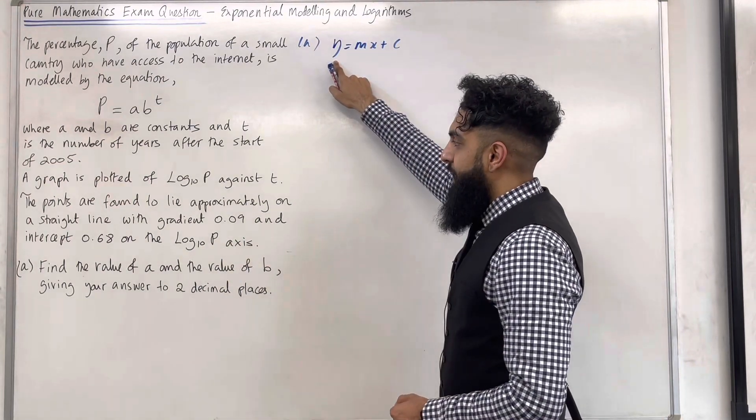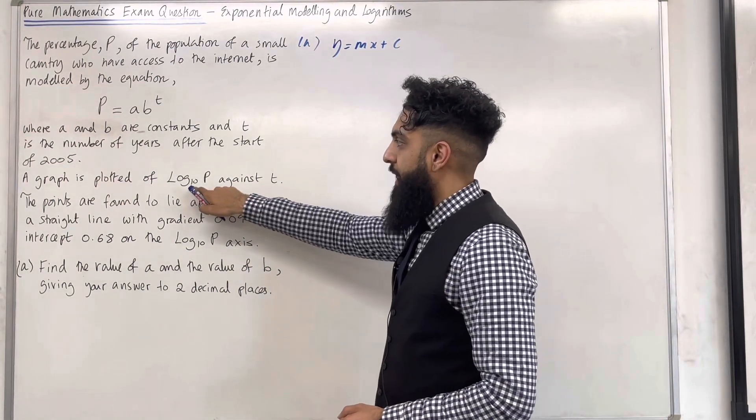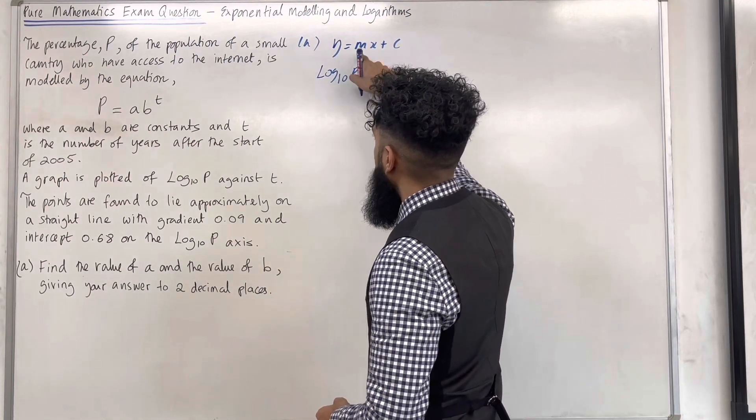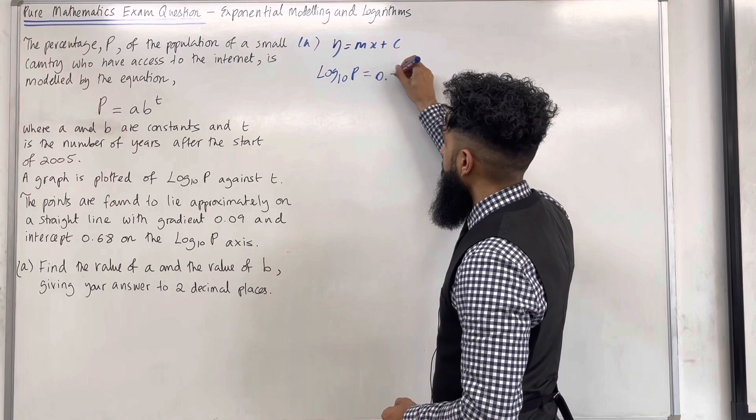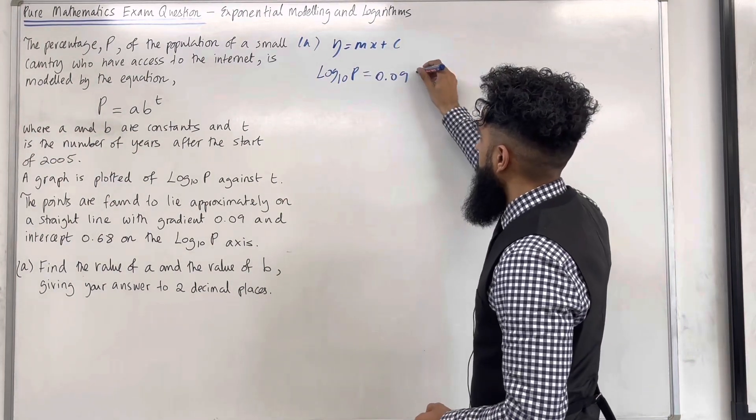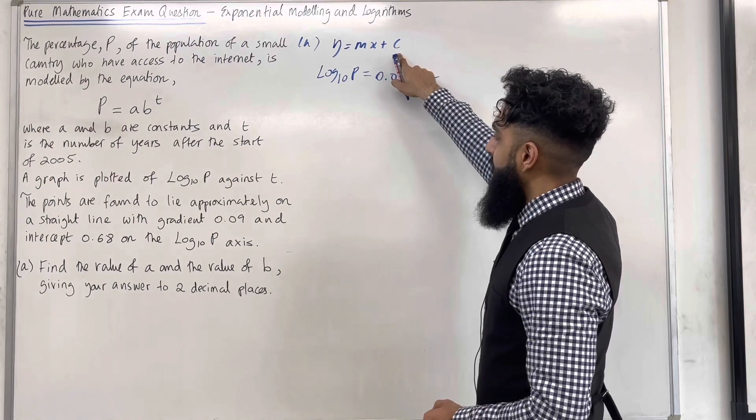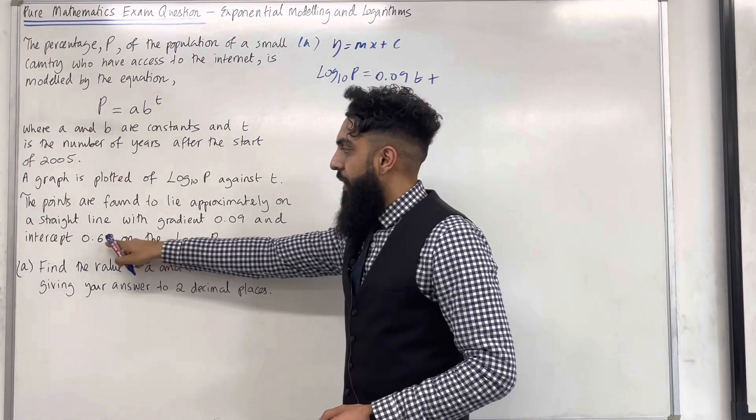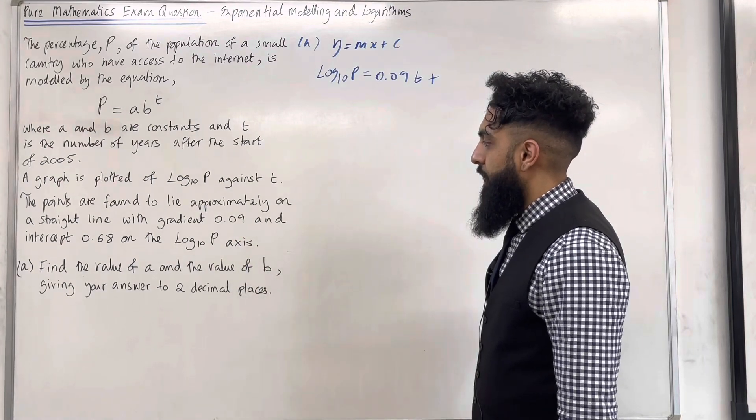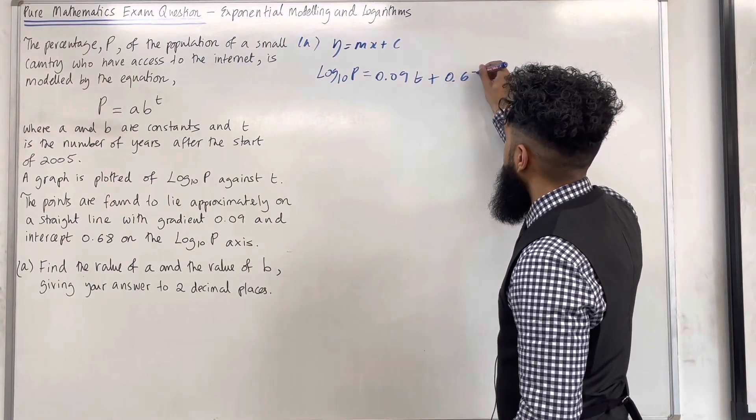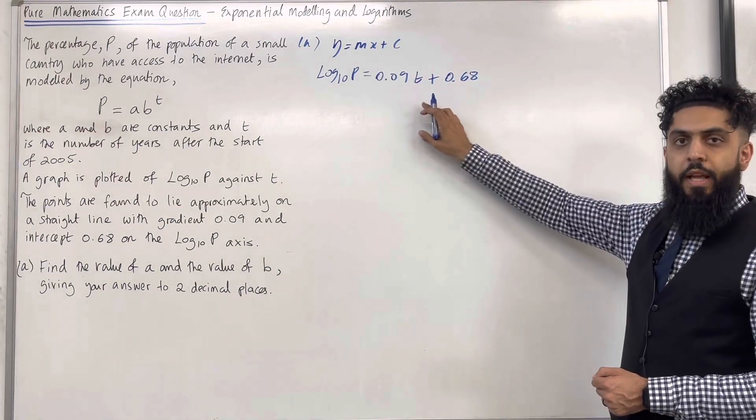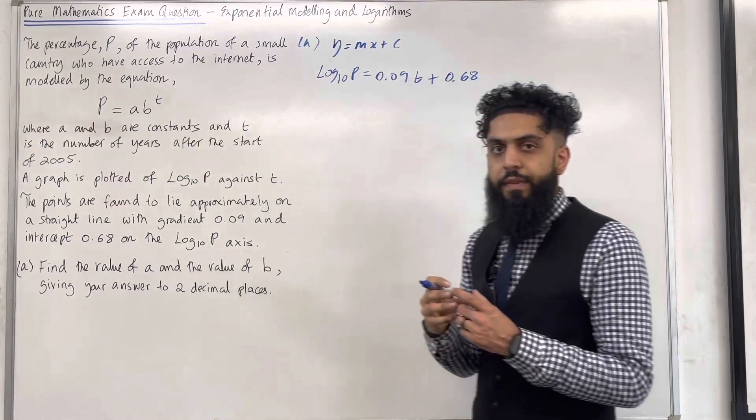Now the Y axis in this scenario is represented by log base 10 of P. So I've got log base 10 of P is equal, the gradient is 0.09. The X axis in this scenario is represented by T plus the Y intercept is represented by 0.68. It is the intercept on the log base 10 P axis, so I've got 0.68.